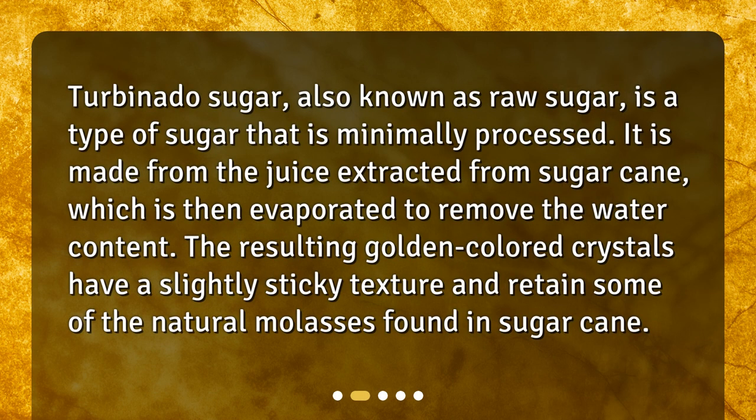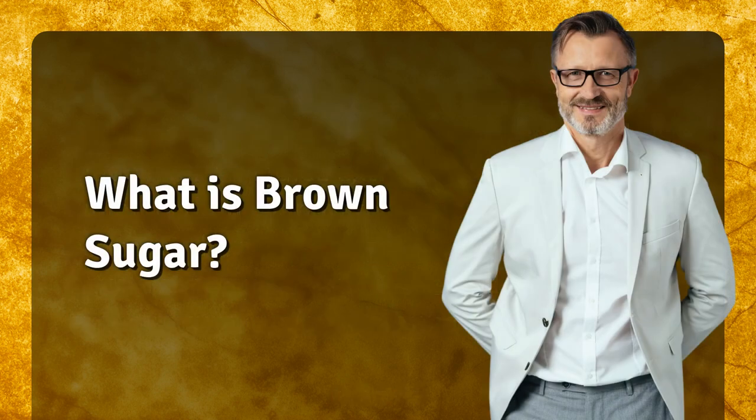Turbinado sugar, also known as raw sugar, is a type of sugar that is minimally processed. It is made from the juice extracted from sugarcane, which is then evaporated to remove the water content. The resulting golden colored crystals have a slightly sticky texture and retain some of the natural molasses found in sugarcane.